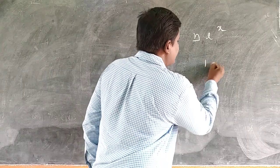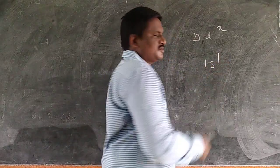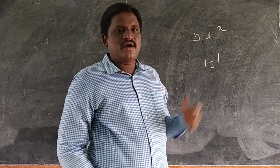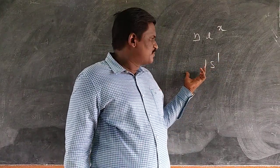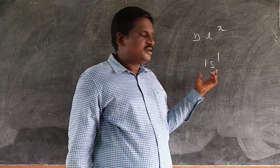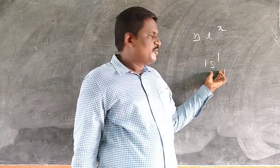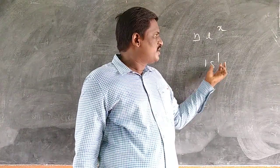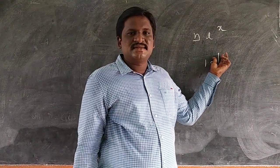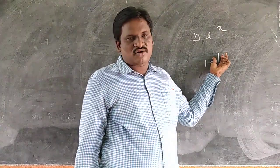For example, consider 1S1. Here, 1 is the principal quantum number, S is the angular momentum quantum number, and the number after is the number of electrons.